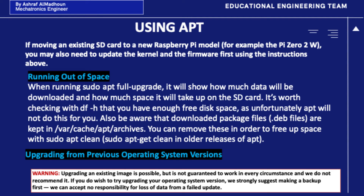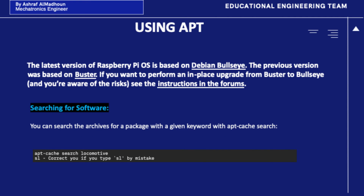When upgrading from previous operating system versions, a warning: upgrading an existing image is possible but it is not guaranteed to work in every circumstance, and we do not recommend it. If you do wish to try upgrading your operating system version, we strongly suggest making a backup first. We can accept no responsibility for loss of data from a failed update. The latest version of Raspberry Pi OS is based on Debian Bullseye; the previous version was based on Buster. If you want to perform an in-place upgrade from Buster to Bullseye and you're aware of the risks, see the instructions in the forum.